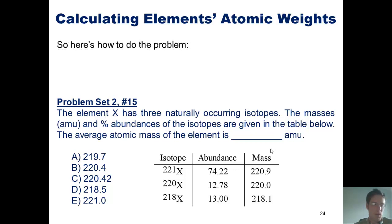So here's how we would do this problem. We would take 220.9, which corresponds to the atomic mass of this isotope, and multiply it by 0.7422. Now that is 74.22 divided by 100.